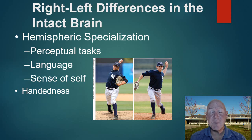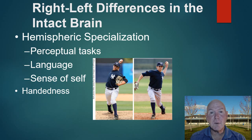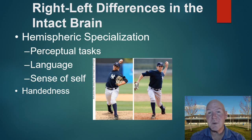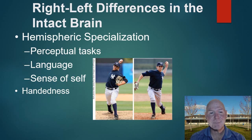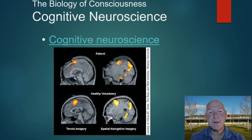Handedness is more complex than it seems — many people eat with their right hand but cut with their left, or throw a ball right-handed but catch left-handed. There are certain fields, like baseball, where we find a predominant number of left-handed people, and there are also interesting findings in mathematics. You can look in your textbook for a list of areas where left-handed people are more prevalent.